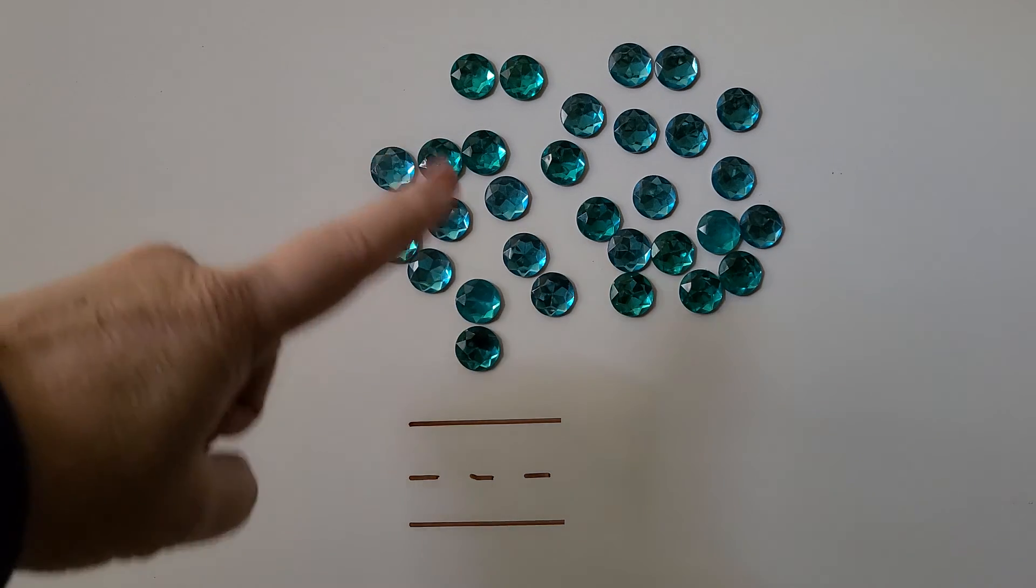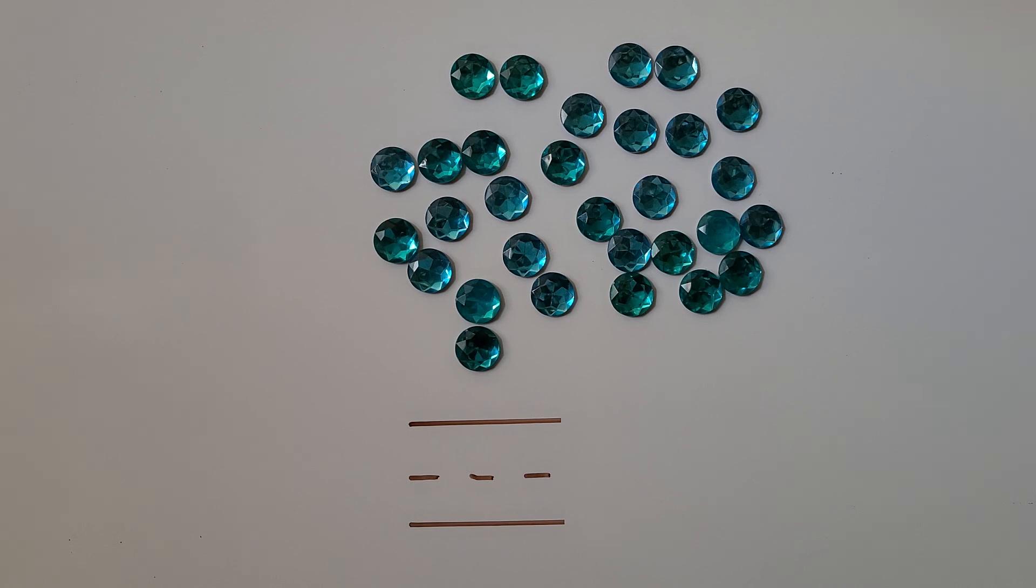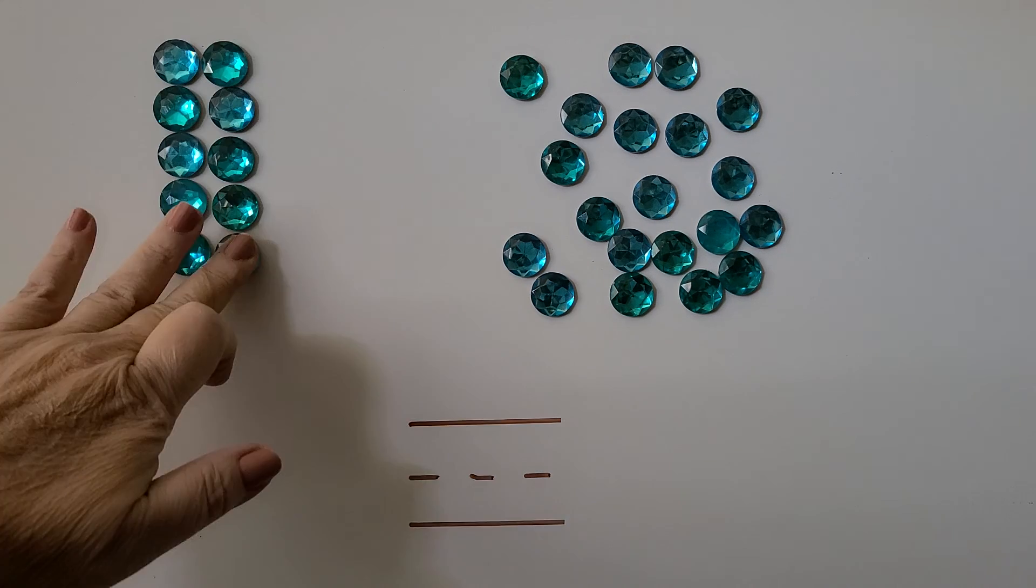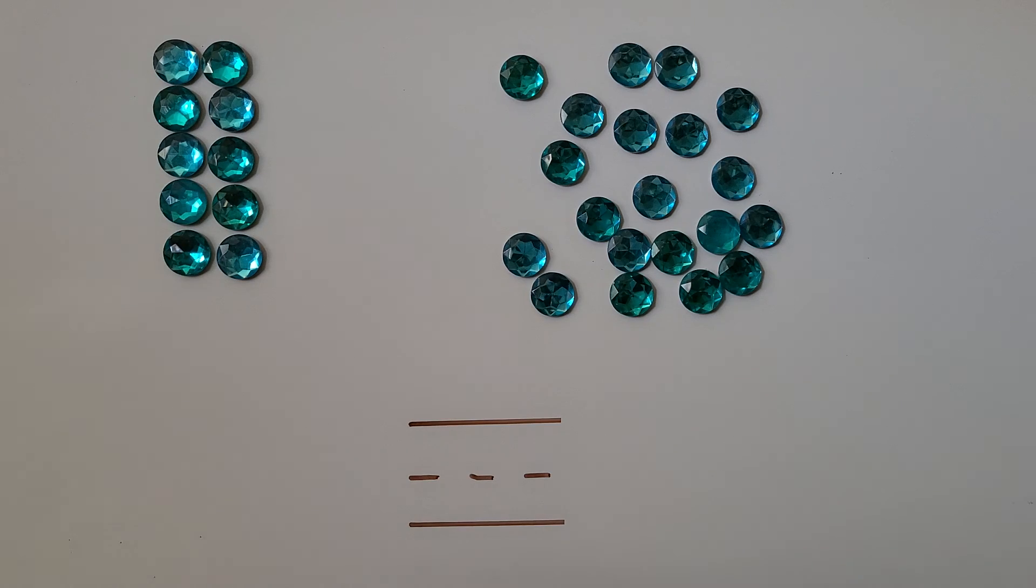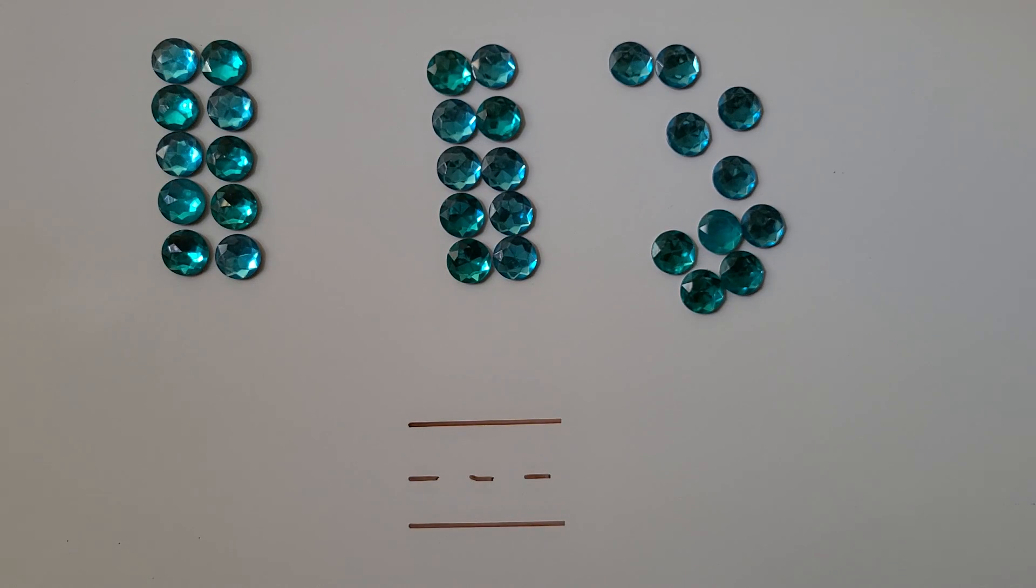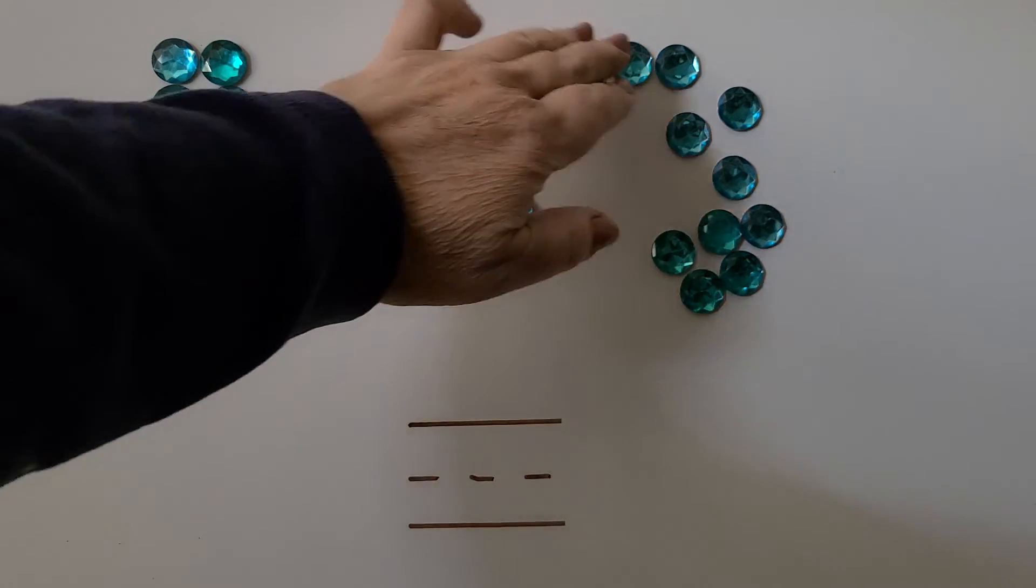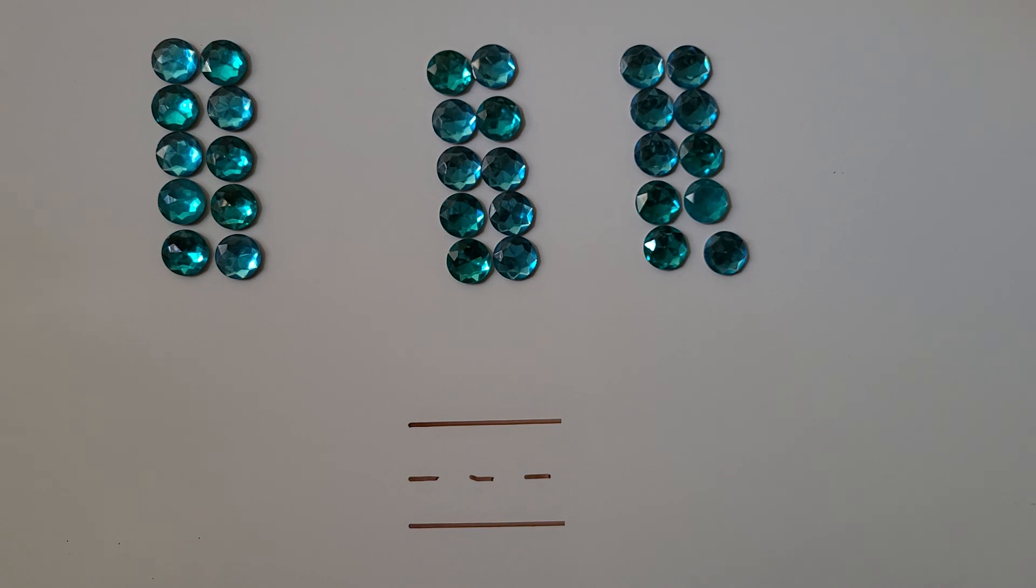Here are many counters. We can count how many there are by putting them in groups of 10. That's one 10. We can make another 10. And now we have another 10. We can try making another one. We have three tens.